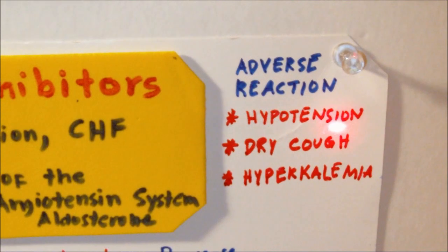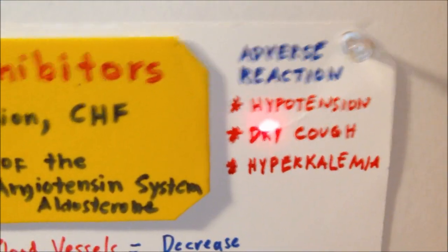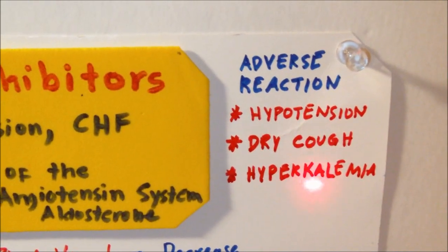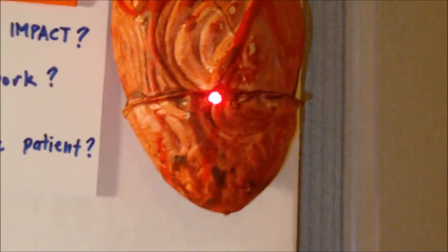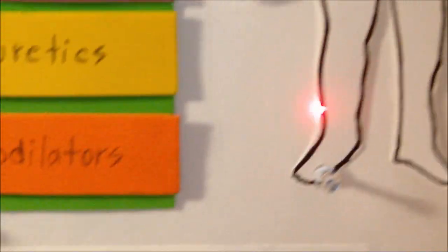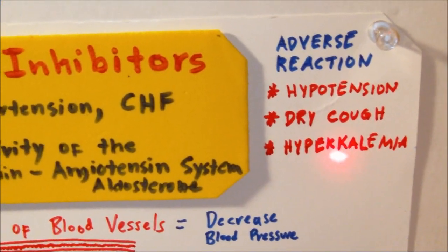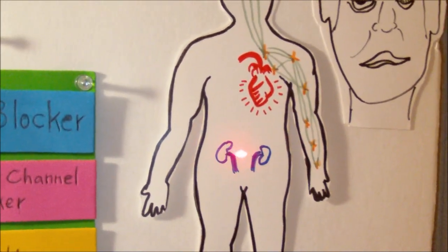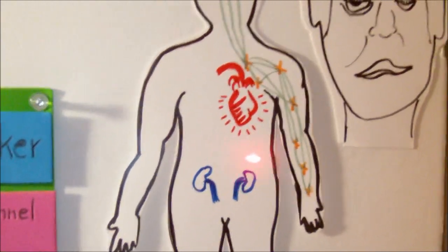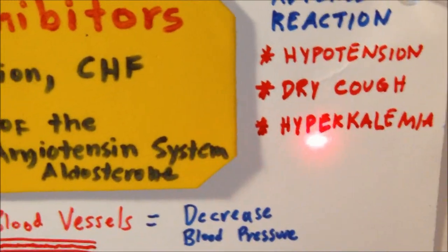The common adverse reactions for ACE inhibitors include hypotension, which can lead to headaches, dizziness, fatigue, nausea, and vomiting. A persistent dry cough is also a common adverse reaction associated with increased bradykinin levels. Patients who experience this cough are often switched to an angiotensin-2 receptor antagonist. Another adverse reaction is hyperkalemia, due to the suppression of angiotensin-2, which leads to decreased aldosterone levels in the kidneys. Since aldosterone is responsible for increasing the excretion of potassium, decreased aldosterone causes potassium retention, resulting in hyperkalemia.